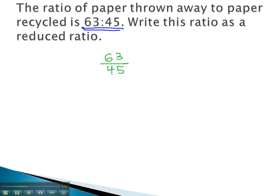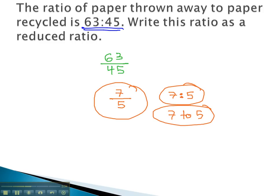And then, we might see that both of those numbers are divisible by 9. Or you can divide by 3 twice and do it in two steps. But if we see the 9 first, 63 divided by 9 is 7, and 45 divided by 9 is 5, and we get the reduced ratio 7 to 5, 7 colon 5, or 7 to 5, whichever method of writing the ratio you prefer.